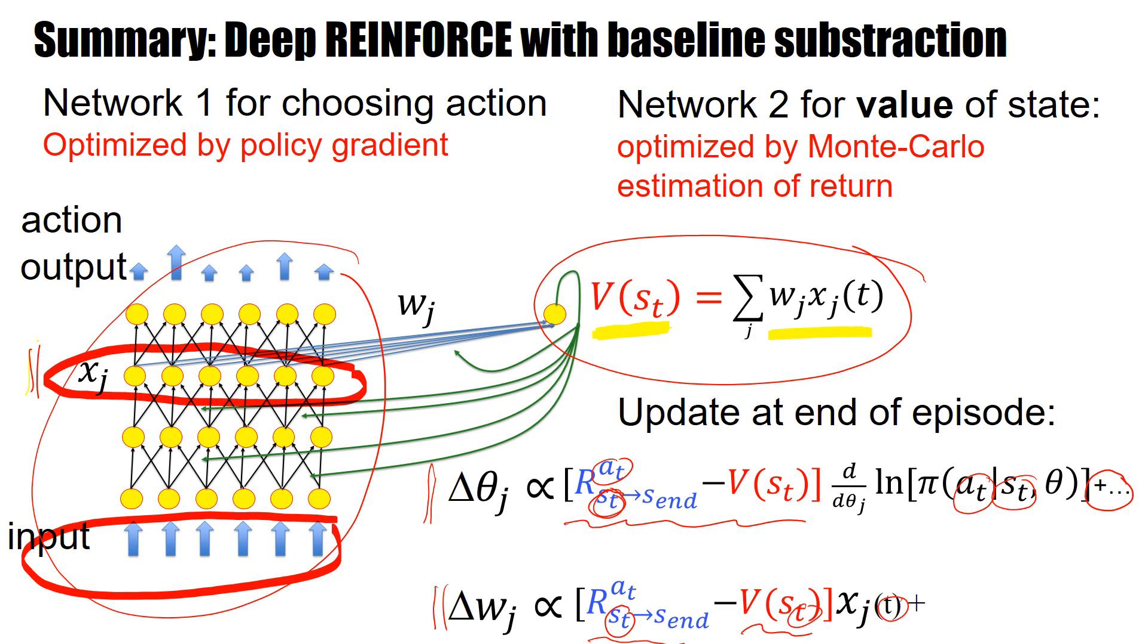We have two networks. The two networks can share the intermediate representation. Network one is there for choosing the actions. It optimizes the action parameters, the network parameters, so as to maximize the total return, the discounted average accumulated reward. In doing so, it will develop smart representations in the hidden layers. These smart representations are used by the second network to estimate the V value, and the V value is used as a bias in the policy gradient algorithm. If you have a deep network in the actor network, it's now a deep reinforcement learning algorithm with baseline subtraction, where the baseline is just the estimated value.